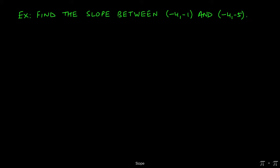Let's say we're asked to find the slope between (-4,-1) and (-4,-5). We start with the usual assignment. We can assign (-4,-1) to be (x1,y1) and (-4,-5) to be (x2,y2).